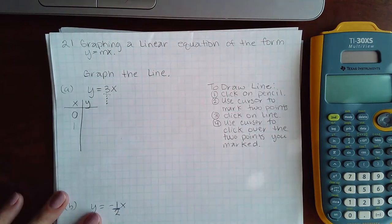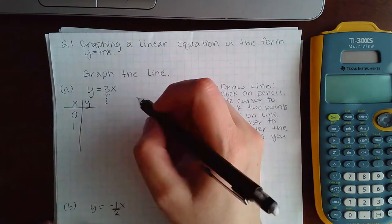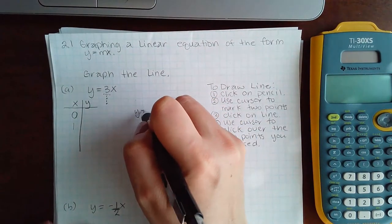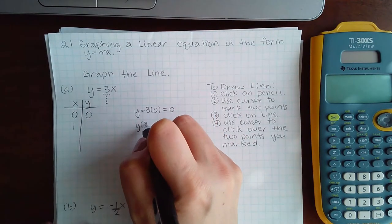I'm going to use that denominator one, and then I'm going to plug both of these numbers into my equation to figure out what y is. So when I plug in zero, I get three times zero, which is zero, and when I plug in one, I end up with three.